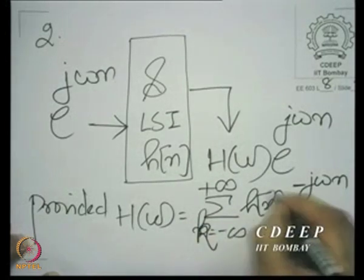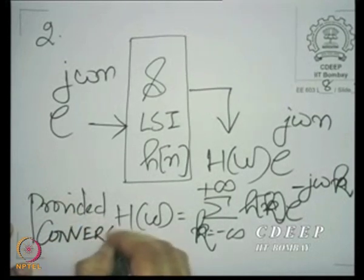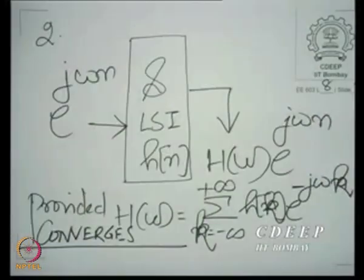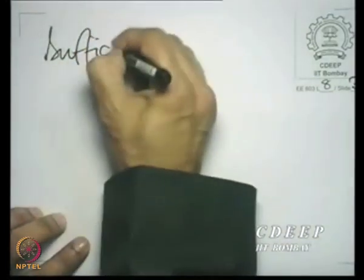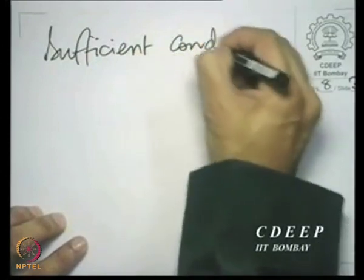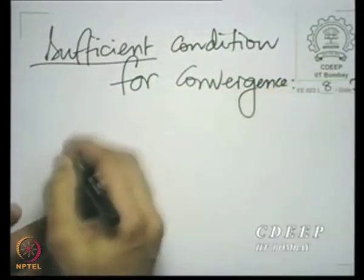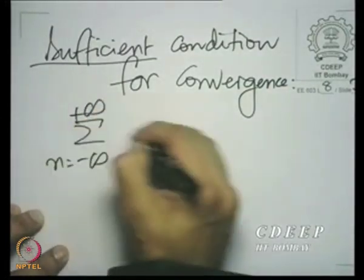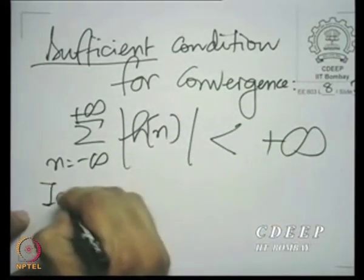We can always make the index of summation k if we like, provided this converges. And that was the million dollar question — when would it converge? We said that a sufficient condition for this to converge is that the impulse response be absolutely summable, that is, the sum of |h[n]| over all n is finite.